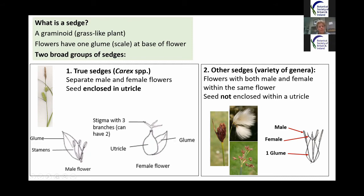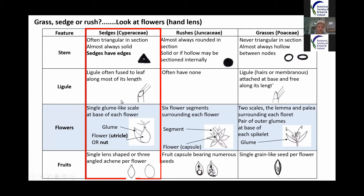Looking at the comparison table: sedges mostly — not always — tend to have triangular stems. Their ligule is fused along the leaf length except at the very top, in contrast to a grass where the ligule is attached at the base and free for the rest. But today we're primarily interested in the flowers and using vegetative features to back up our identification.